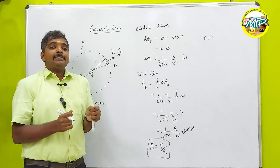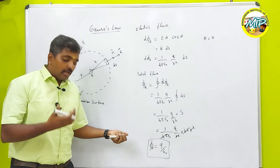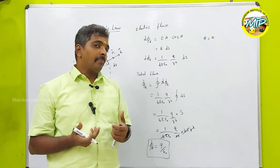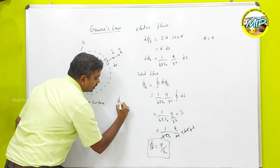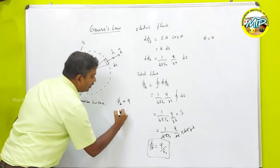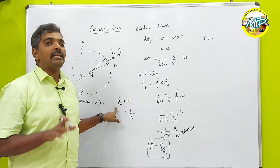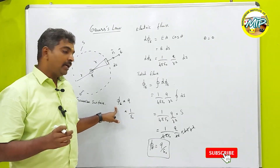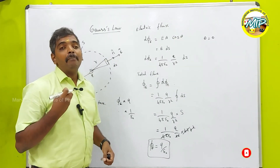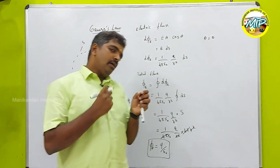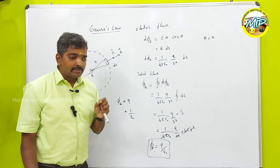The total flux through the Gaussian surface is Q/ε₀. This means the total flux is directly proportional to Q and inversely proportional to ε₀ (the permittivity of the medium). Importantly, the total flux through the Gaussian surface is independent of r — it does not depend on the radius of the Gaussian surface, only on the magnitude of the enclosed charge.